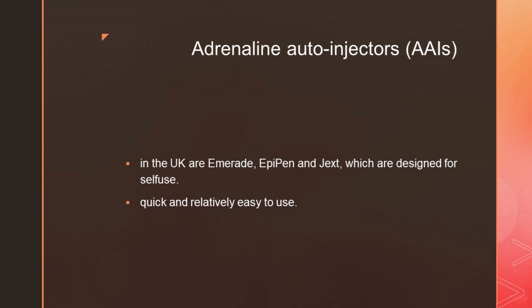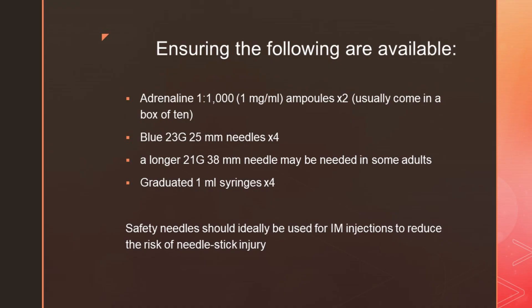Adrenaline auto-injectors are also available — they are quick and relatively easy to use compared to loading from an ampoule. Always be ready because you don't know which patient will have anaphylaxis. Your clinic should stock: at least two ampoules of adrenaline 1:1000 (1 mg/1 ml), four 23-gauge needles 25 mm long, a 38 mm needle for obese patients, and 1 ml graduated syringes. Safety needles should ideally be used for IM injections to reduce needlestick injury.